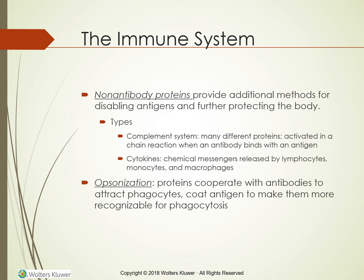Non-antibody proteins provide additional methods for disabling antigens and further protecting the body. There are two groups: the complement system and cytokines. The complement system is made up of many different proteins activated in a chain reaction known as the complement cascade when an antibody binds with an antigen. Collectively, the complement proteins cooperate with antibodies to attract phagocytes; coat antigens to make them more recognizable for phagocytosis, a process known as opsonization; insert themselves within the antigen cell wall causing holes to form so the antigen's contents leak out, resulting in its destruction; and stimulate inflammation through the release of histamine from mast cells and basophils.